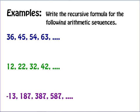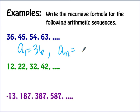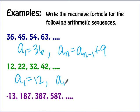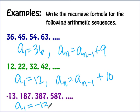A couple of quick examples to solidify this. For the first: list the initial term, then a-sub-n equals a-sub-(n minus 1) plus 9. For the second: initial term is 12, then a-sub-n equals a-sub-(n minus 1) plus 10. For the last: a-sub-1 equals negative 13, and a-sub-n equals a-sub-(n minus 1) plus 200.